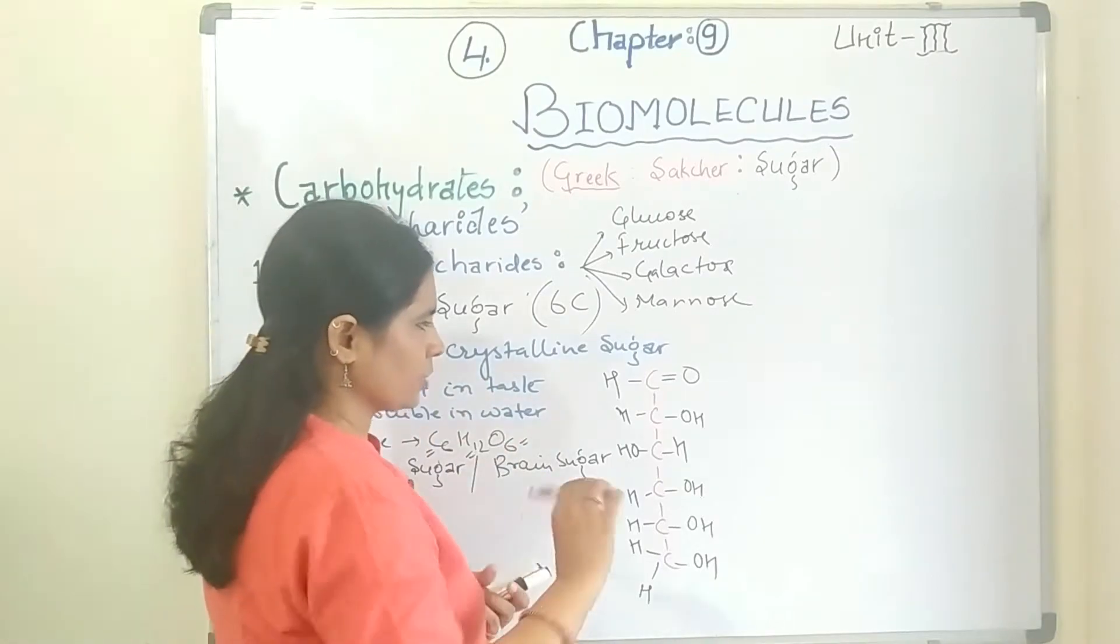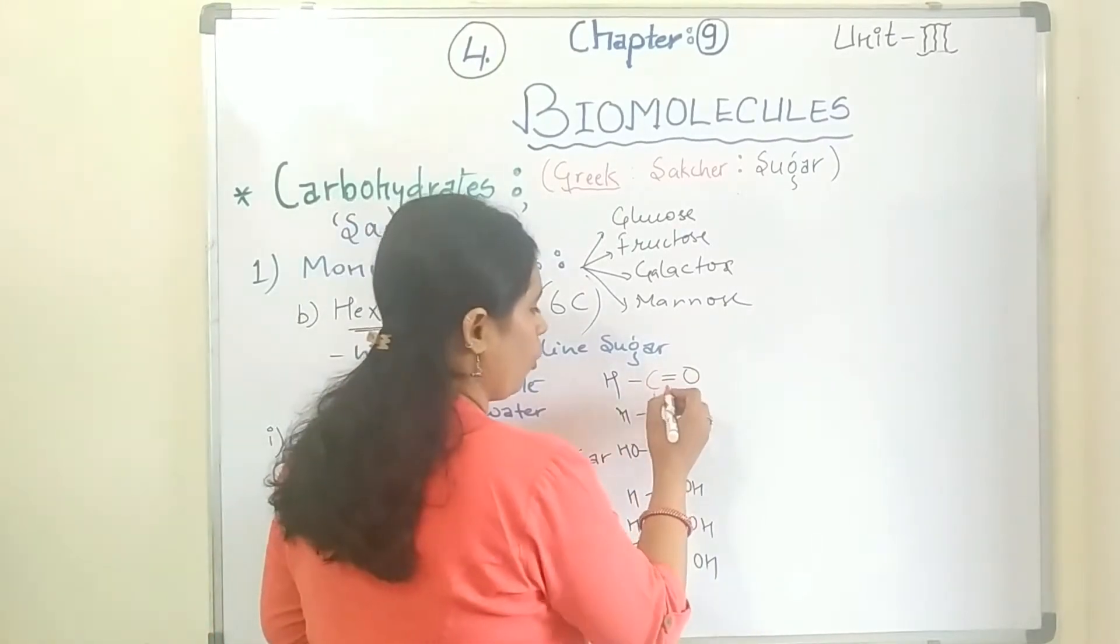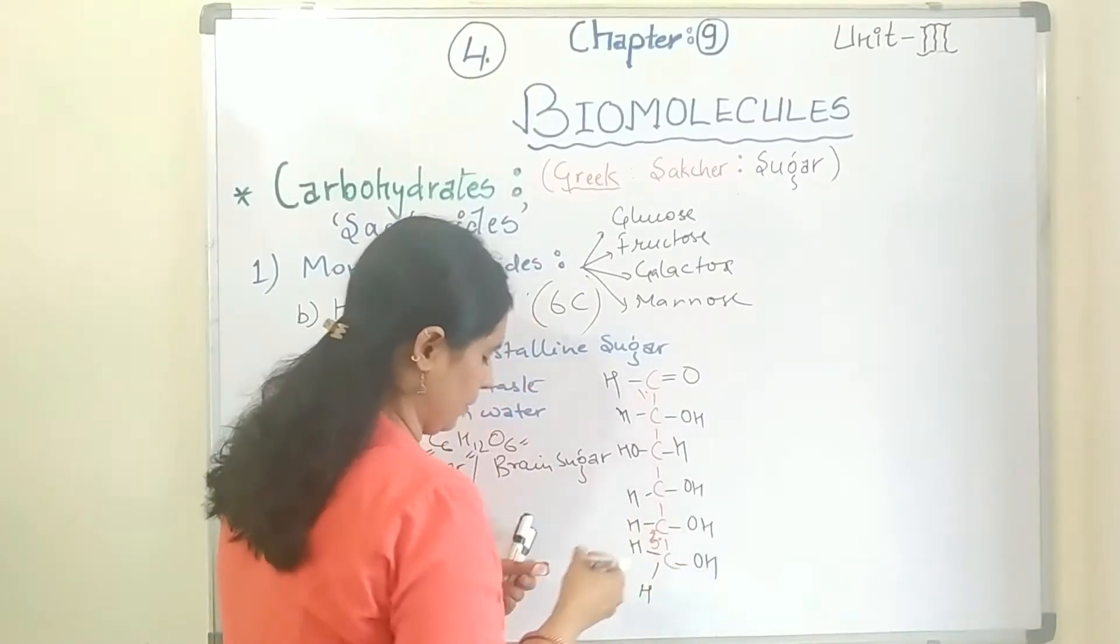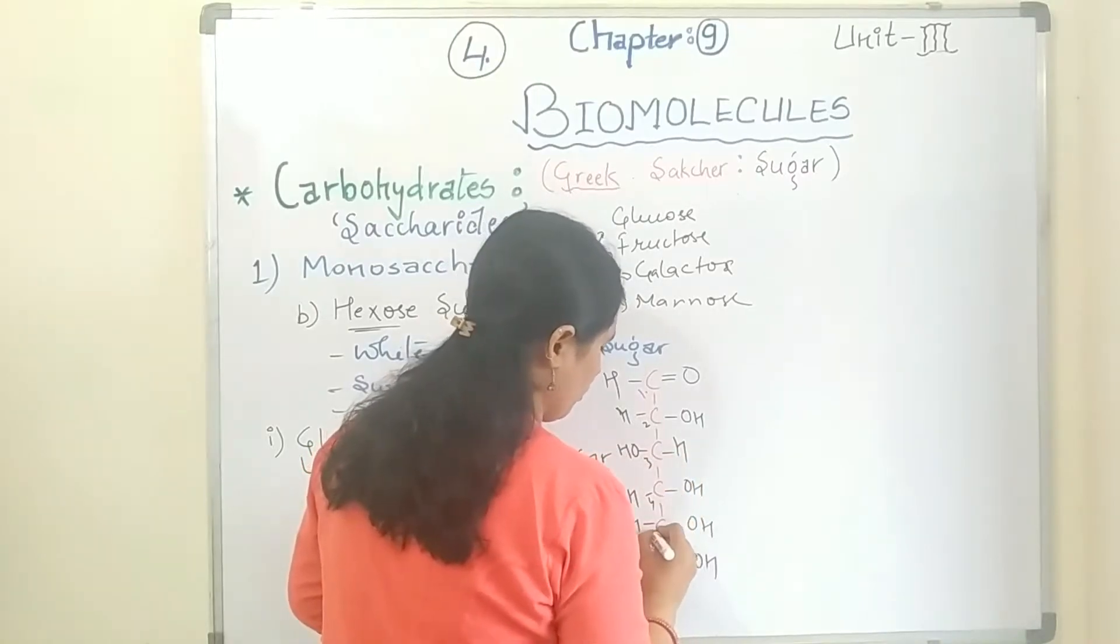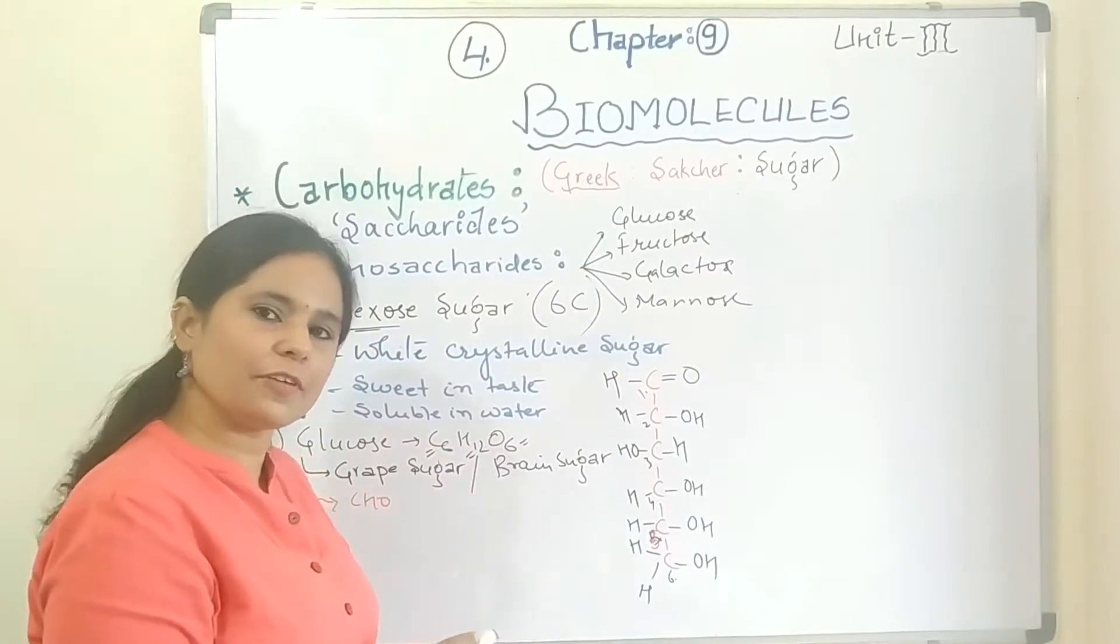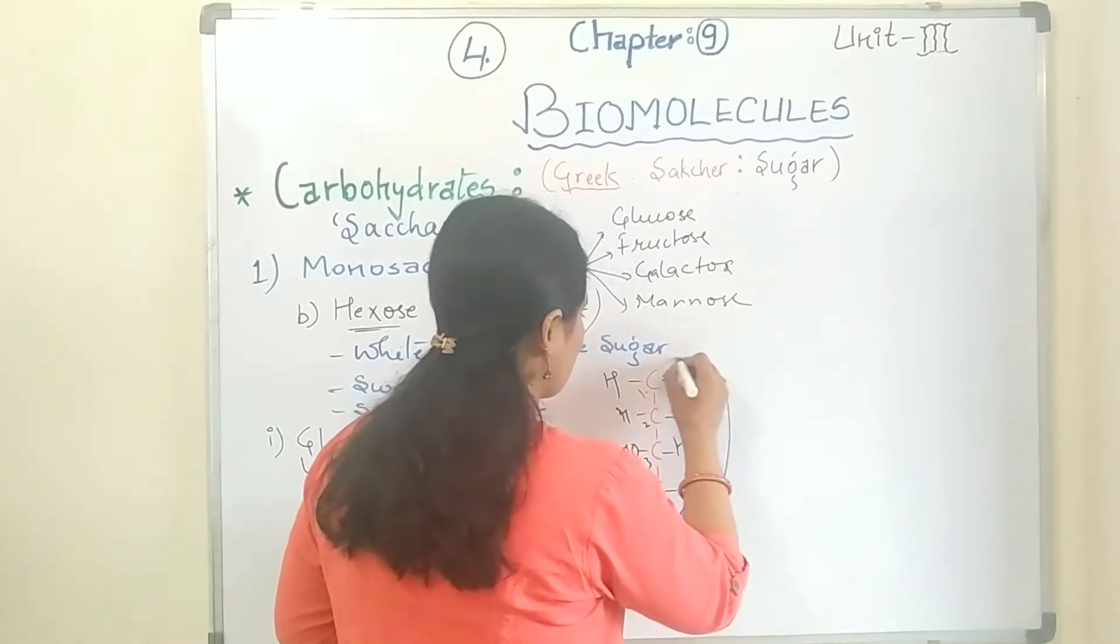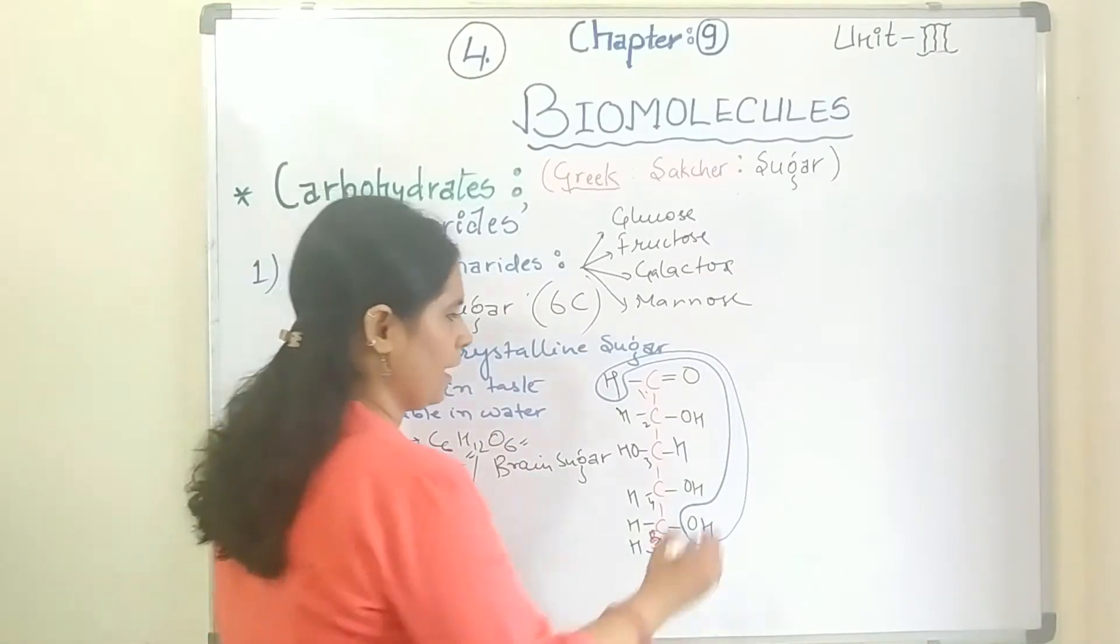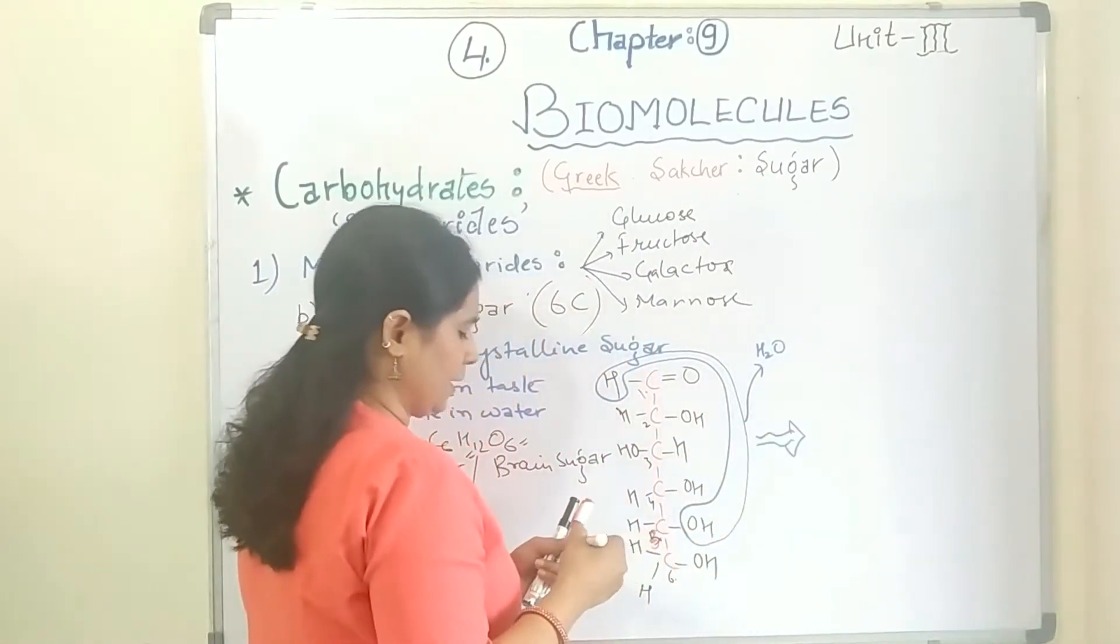This is the open structure of glucose. Now this will make the ring structure. For making the ring, it forms between the first carbon and the fifth carbon. Just remember the numbers: first, second, third, fourth, fifth, and sixth. The ring will form between first carbon and fifth carbon. For this, these two things are removed in the form of water.